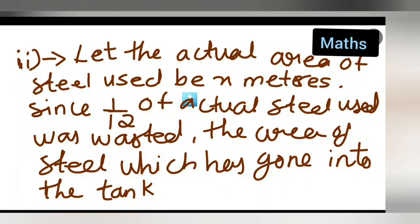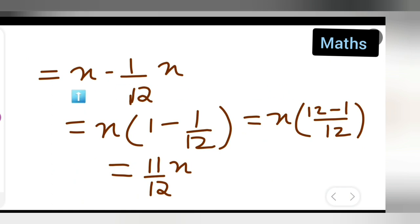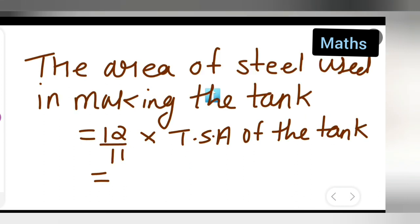Now for the next part, we need to find the actual steel used. Let the actual area of steel used be x square meters. Since 1/12 of the actual steel was wasted, the steel that went into the tank = x − (1/12)x = x(1 − 1/12) = 11x/12.